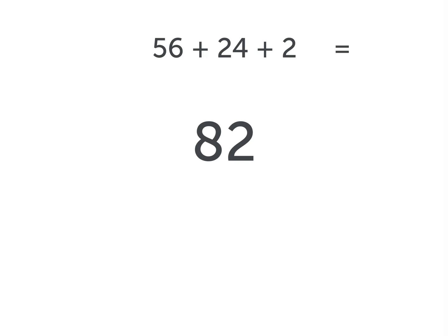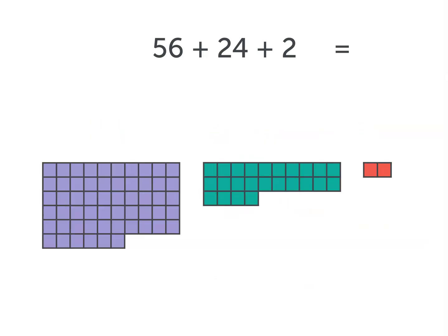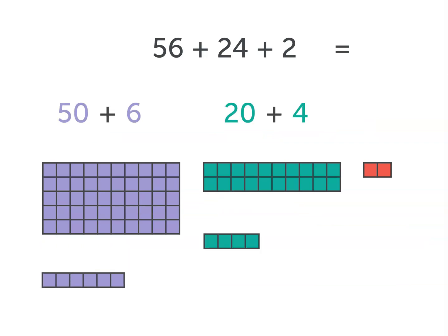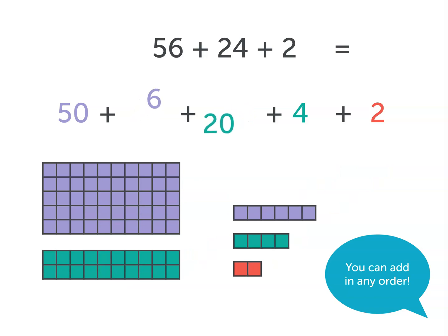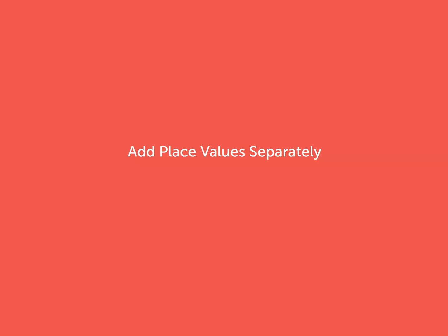Let's look at what we did again. We regrouped our numbers to 50 plus 6, 20 plus 4, plus 2. Since we can add in any order, we rearranged our numbers, then added the place value separately.